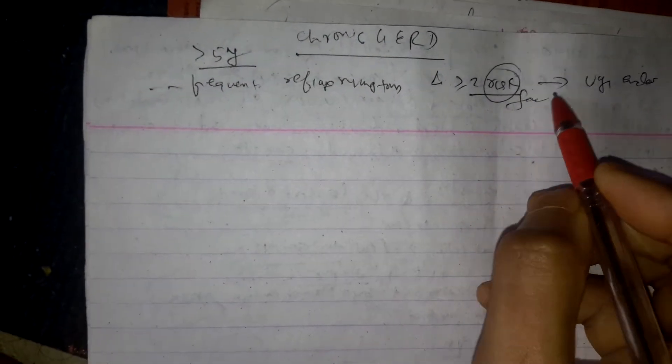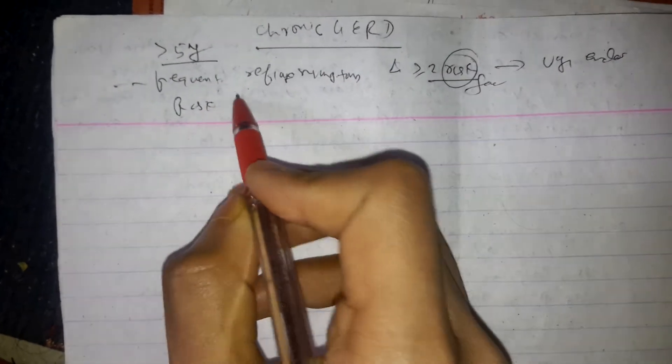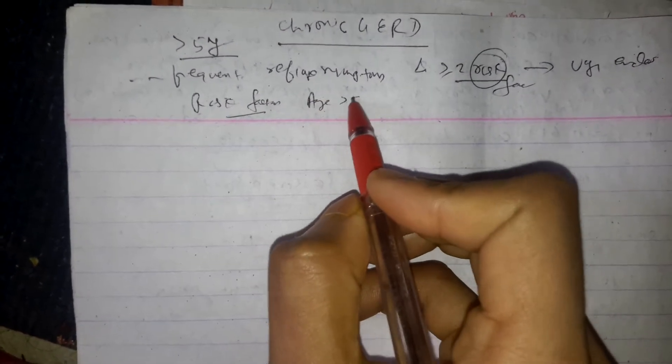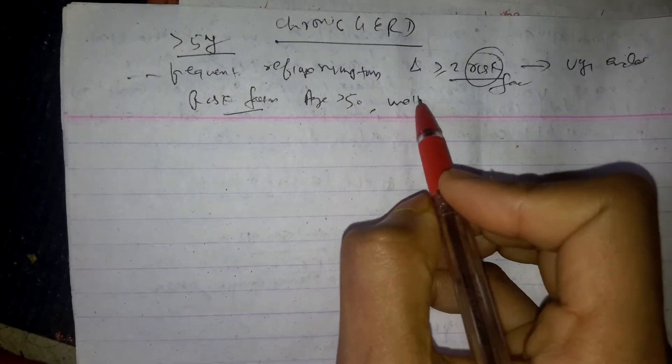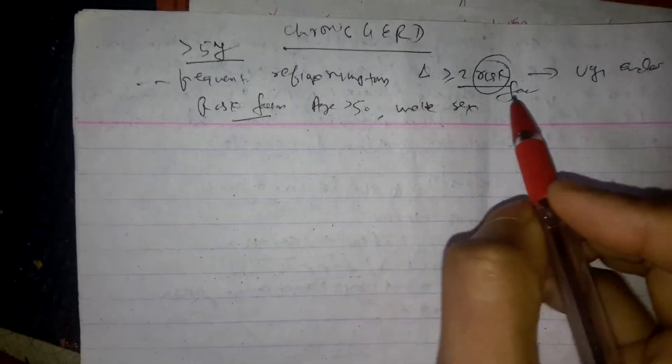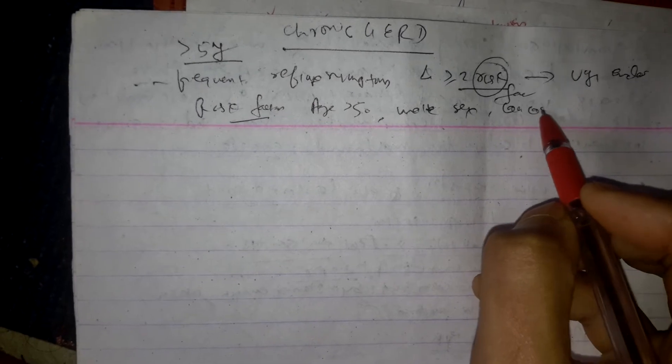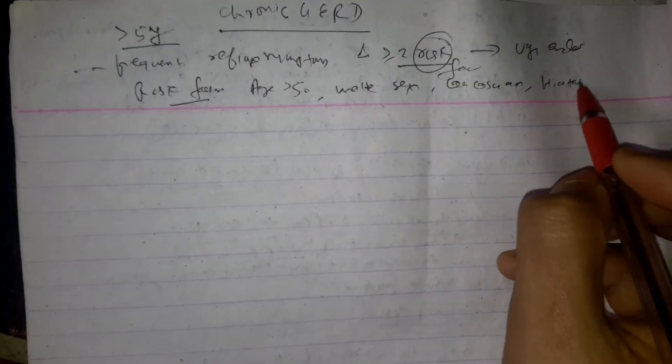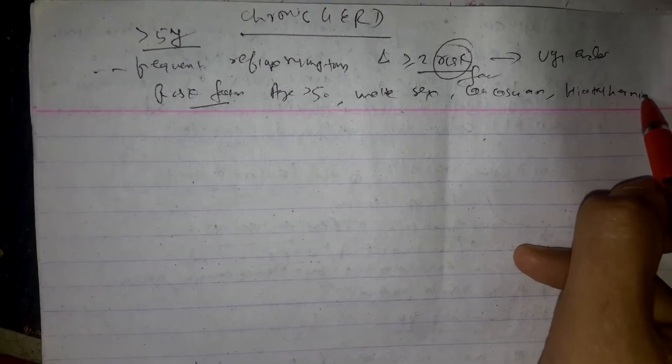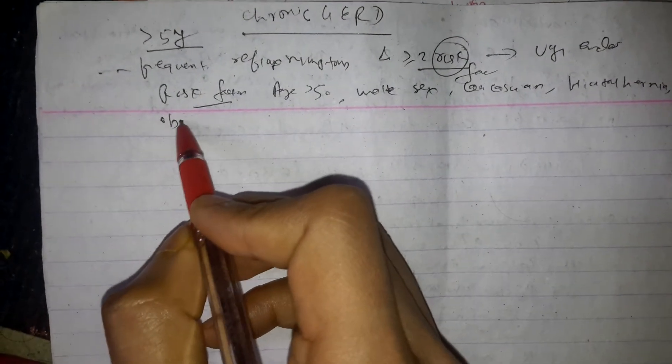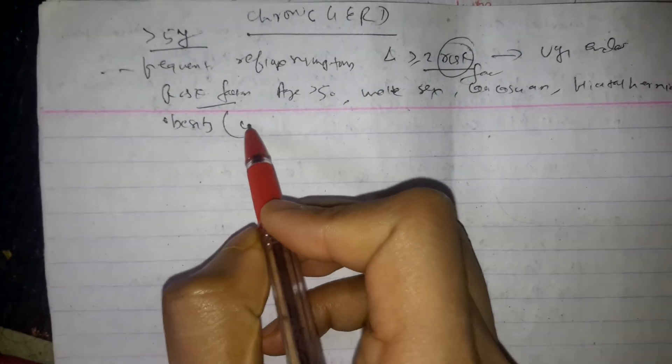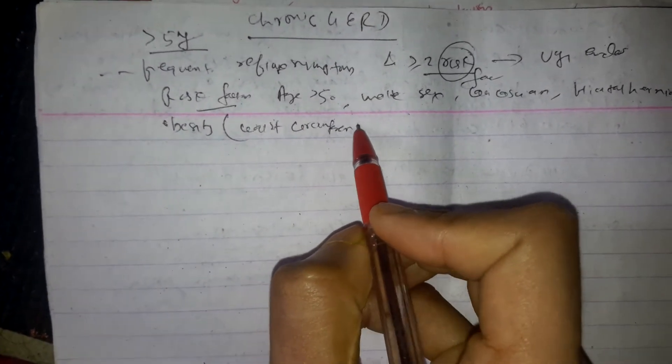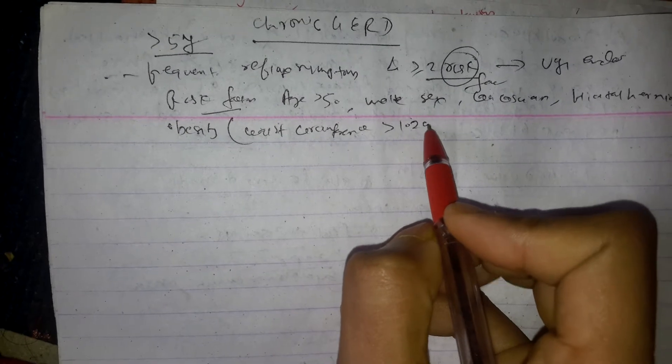Risk factors include age greater than 50, male sex, caucasian race, and hiatal hernia, obesity or waist circumference greater than 102 centimeter, waist circumference greater than 102 centimeter.